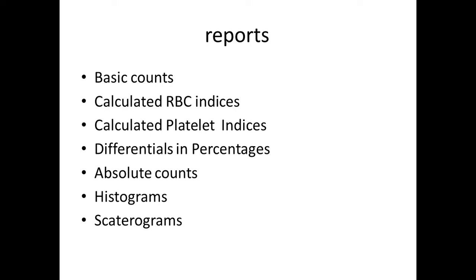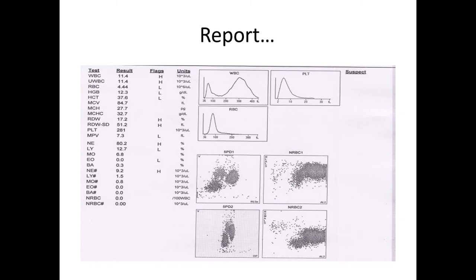Histograms are graphic representations of RBCs, WBCs, and platelets. In the complete cell counter report, values appear on the left side and graphical representations of the counts appear on the right side.